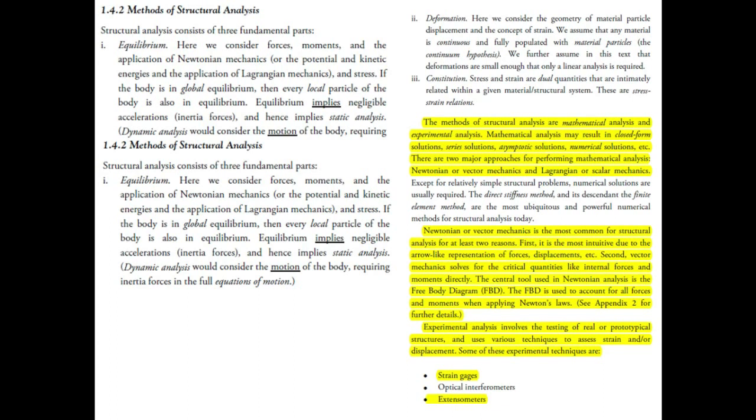The constitutive equations: stress and strain are dual quantities that are intimately related within a given material structural system. That material structural property is the modulus of elasticity, because every material—whether steel, aluminum, copper, brass—will have a different E. These are the stress-strain relations.